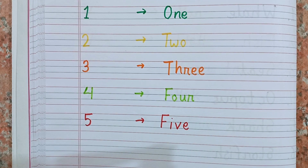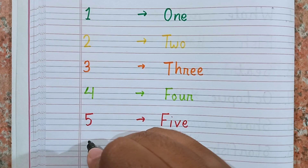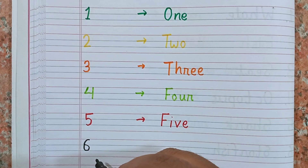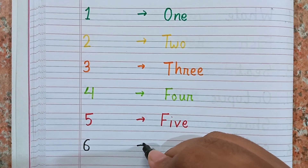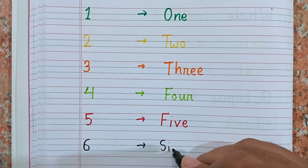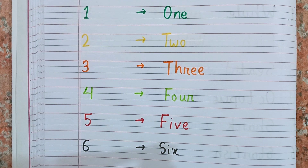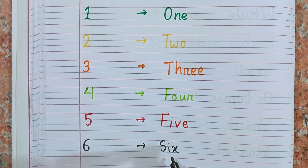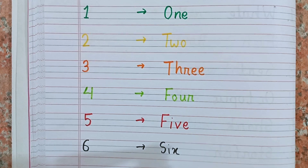The next number after 5 is 6. Now I am going to write 6. This is 6, and the spelling of 6 is S-I-X. Remember the spelling, kids: S-I-X.